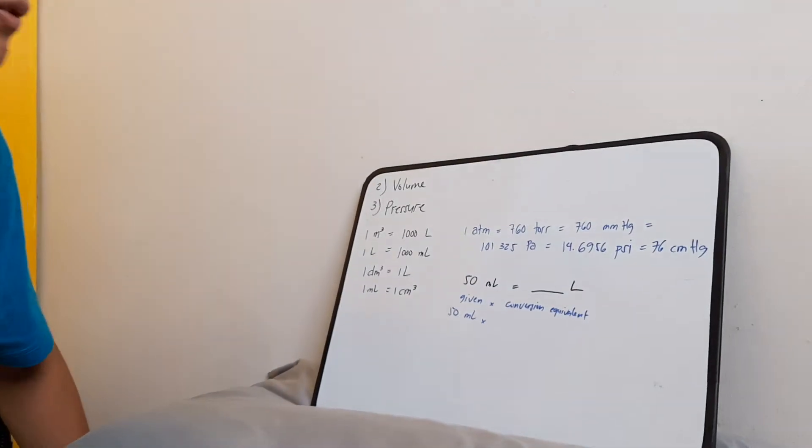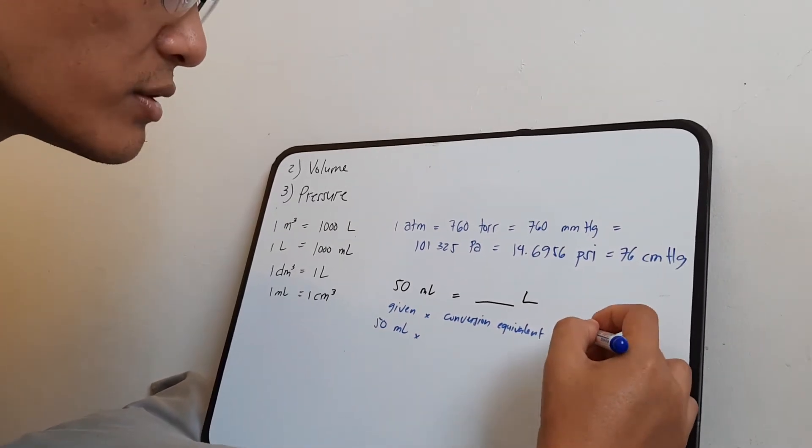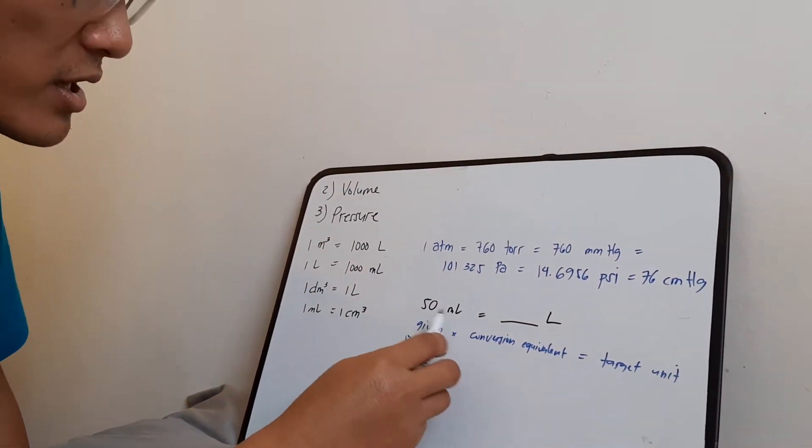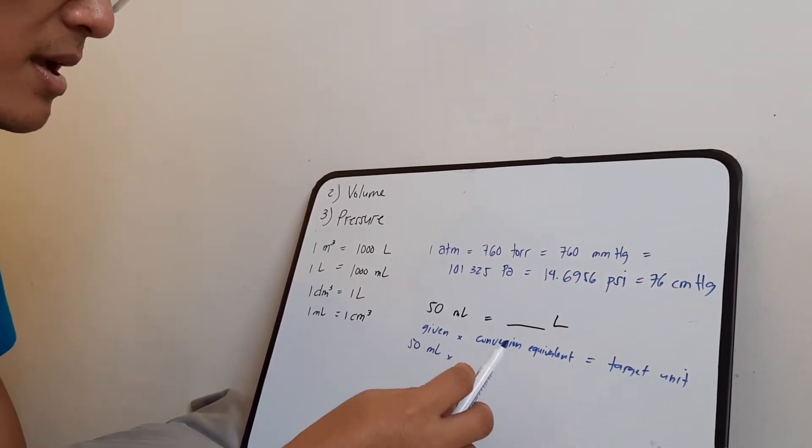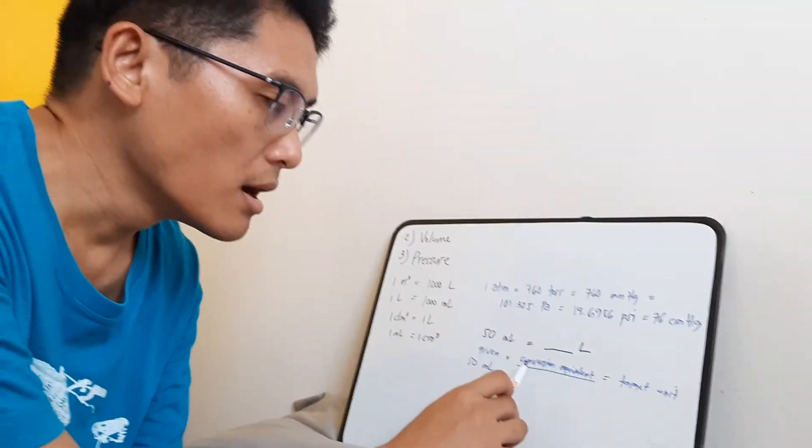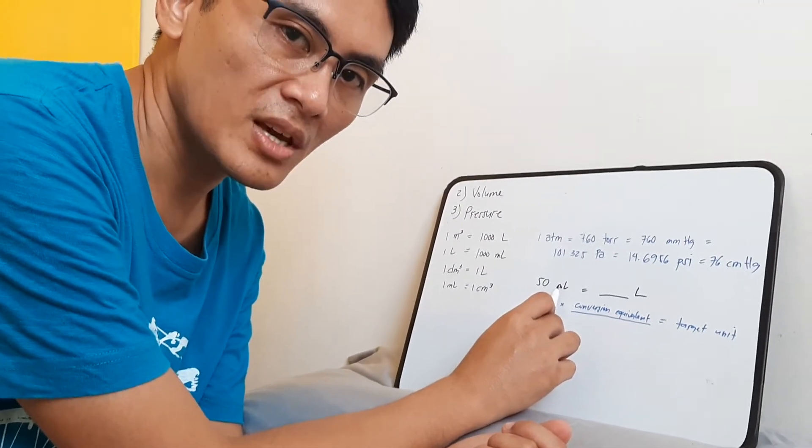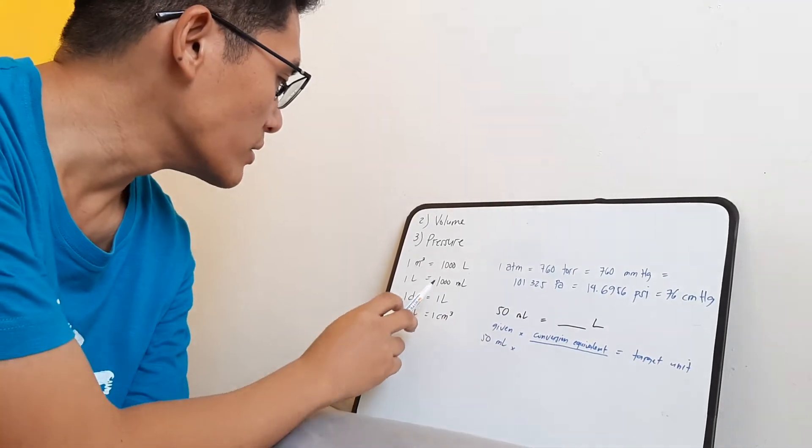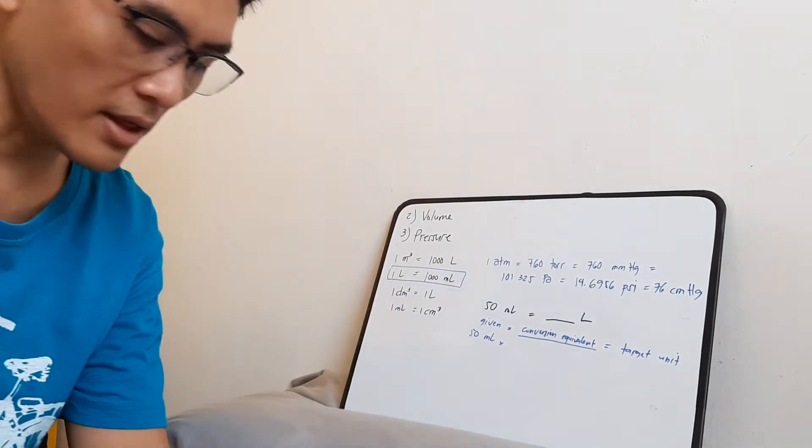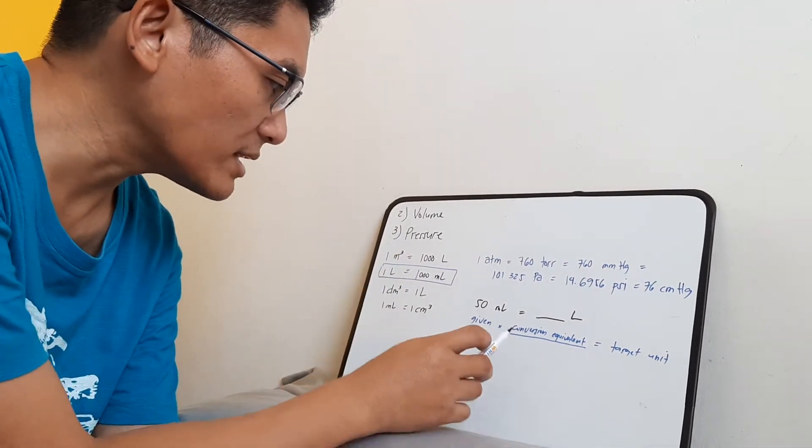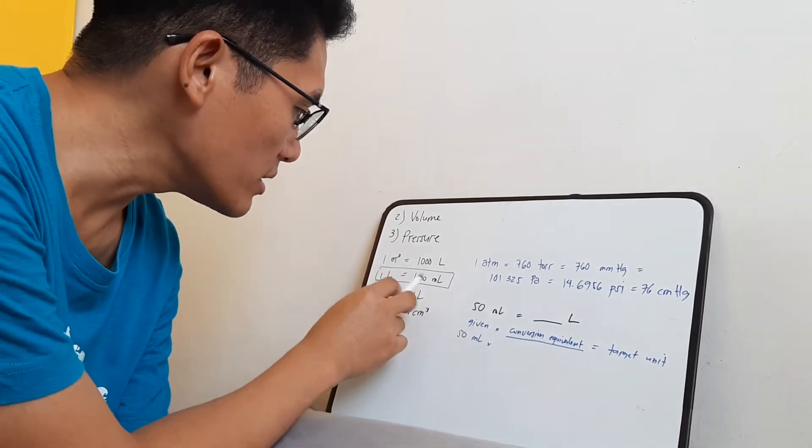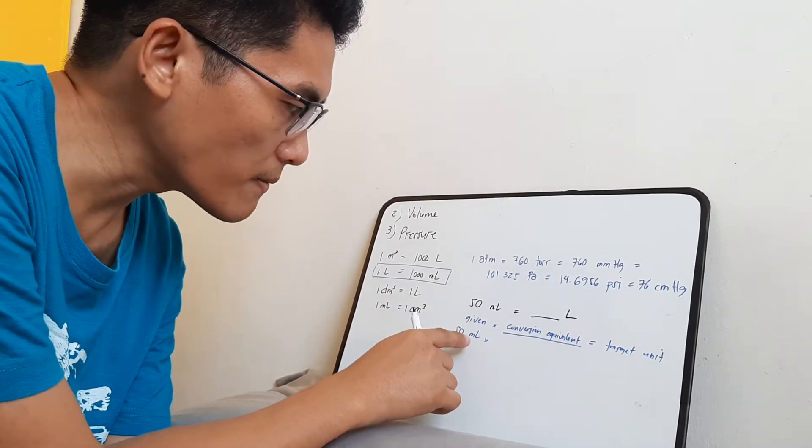And then once you multiply it with conversion equivalent, you will now get your target unit. So for example here, this is your given, so you write your given. And then now you write your conversion equivalent. So where do you get this conversion equivalent? So basically you are asking how many ml is equivalent to one liter. So you find that here, right? So this is the conversion equivalent you are targeting. And then all you need to do is copy that, but in fraction form. Copy that in fraction form.